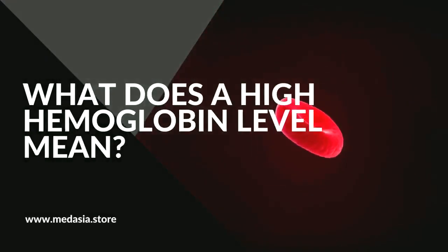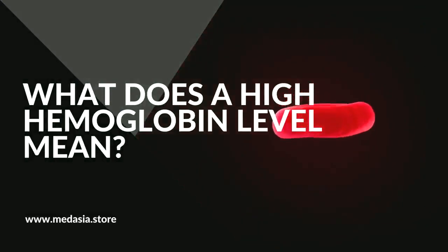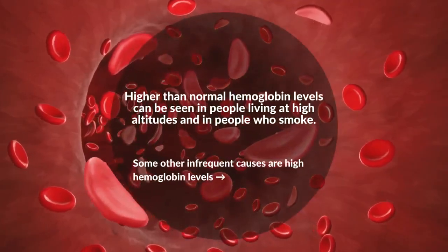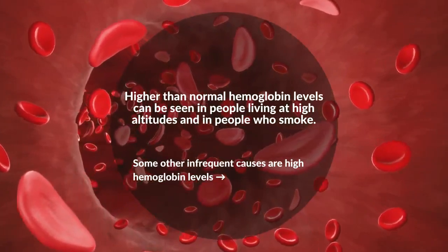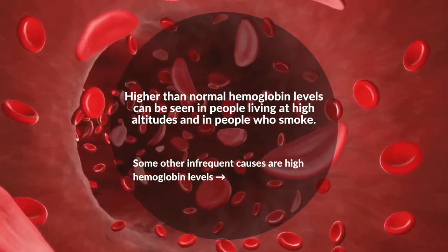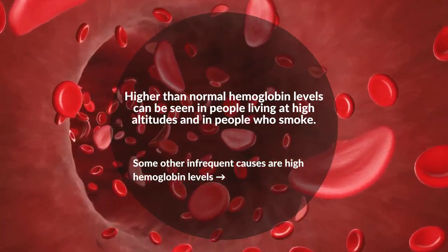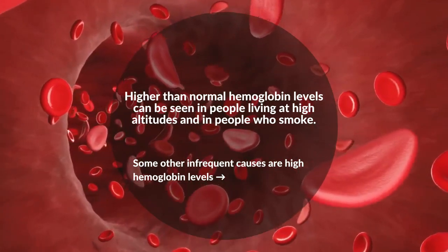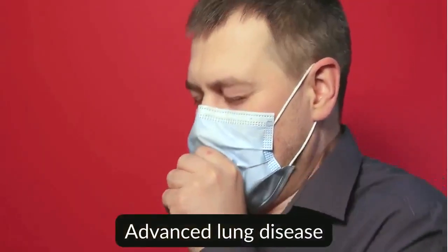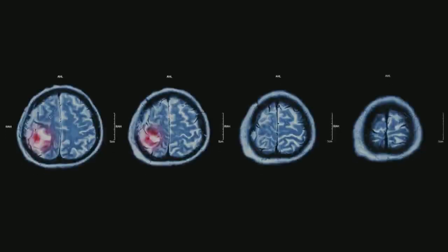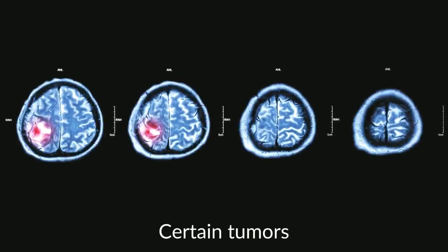What does a high hemoglobin level mean? Higher than normal hemoglobin levels can be seen in people living at high altitudes and in people who smoke. Some other infrequent causes of high hemoglobin levels include advanced lung disease, certain tumors, and disorder of the bone marrow.